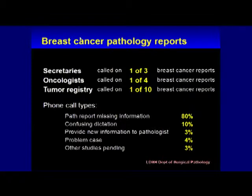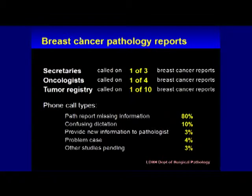She built a very simple data system — a piece of paper next to her secretary's phone. All of those phone calls came through Liz's secretary. She said: anytime somebody calls with a question about a path report, tally down that we got another one, then I want to know why. A few weeks of data showed her that about 80% of the phone calls coming back in were because the path report was missing critical information necessary to plan the patient's care. Another 10%: the dictation was confusing and the physician couldn't figure out what the pathologist meant.